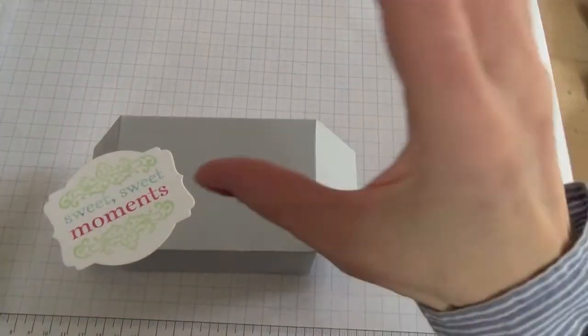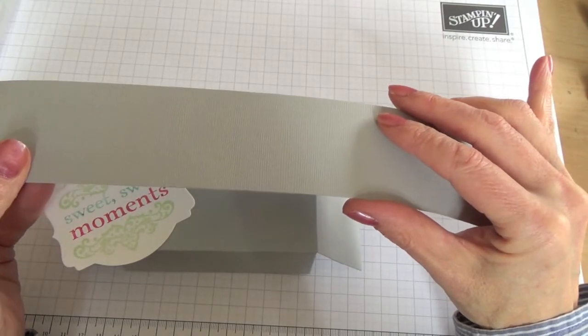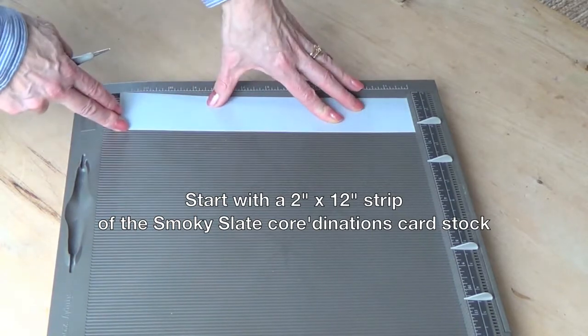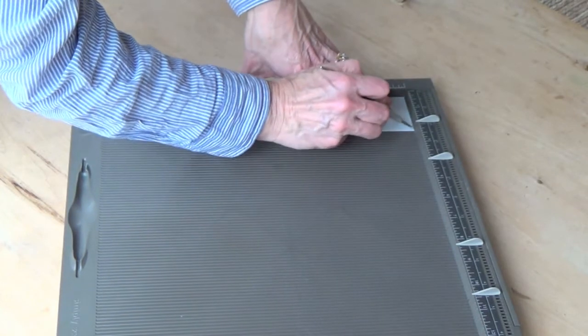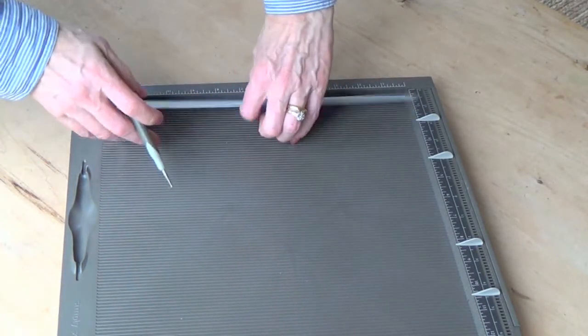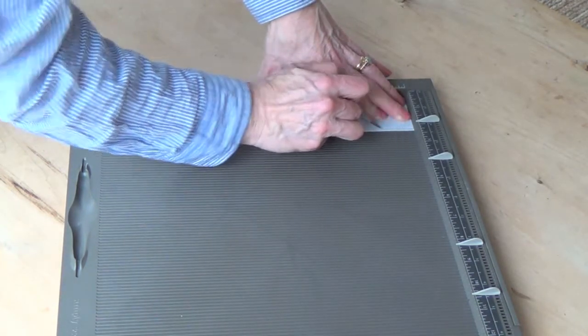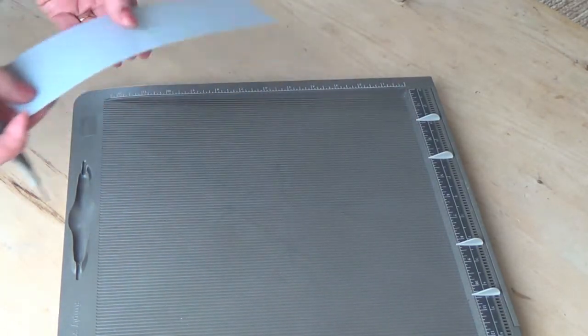Here's the label which we want to put on our box, but first we want to make a belly band out of the coordinations cardstock. The first thing to do is to place your strip lengthwise on the simply scored and just score down the length of each side. This gives a really nice professional looking finish to your belly band.